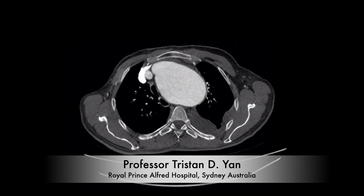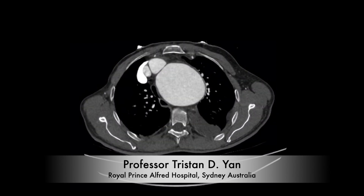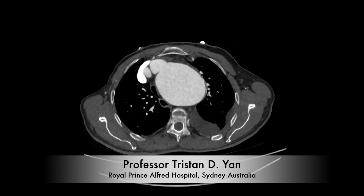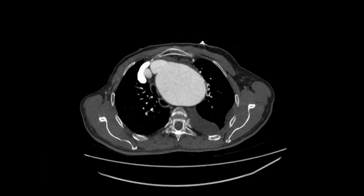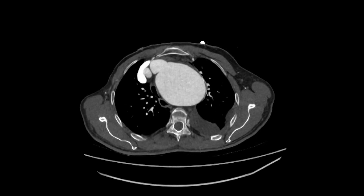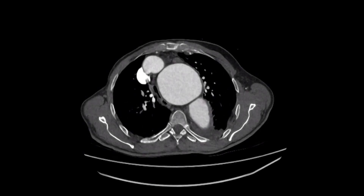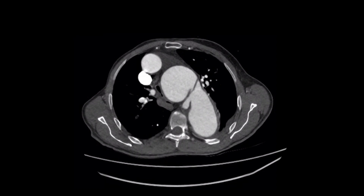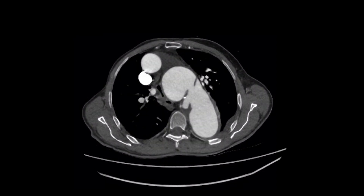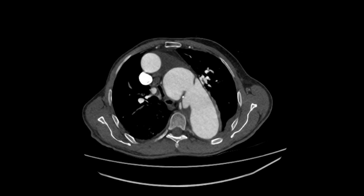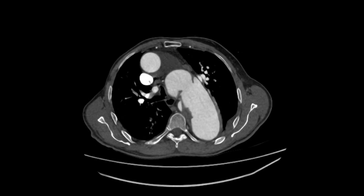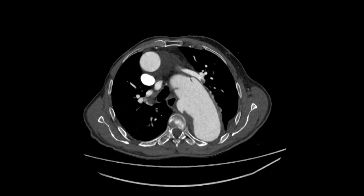On CT scan, as you can see, there's a huge thoracic aortic aneurysm arising from the aortic arch, measuring about 10 centimetres in diameter, pushing against the back of the sternum. The aortic aneurysm has pushed the ascending aorta into the right chest, and the distal aortic arch is dissected.